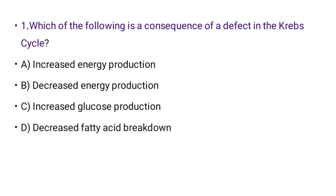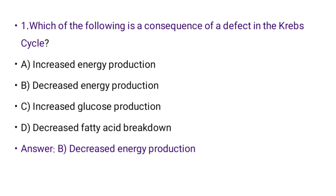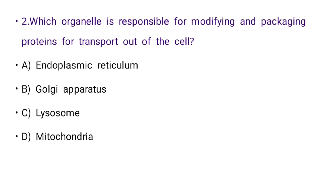Question number one: Which of the following is a consequence of a defect in the Krebs cycle? Options: increased energy production, decreased energy production, increased glucose production, decreased fatty acid breakdown. The right answer is B: decreased energy production.